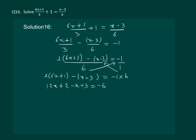Adding the like terms, 12x minus x will give us 11x and 2 plus 3 will give us 5 equal to minus 6.